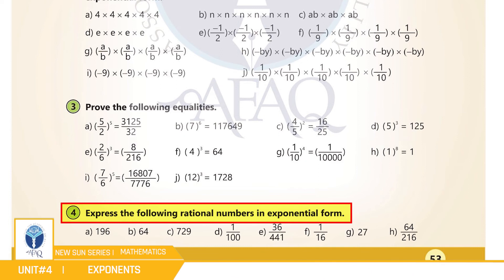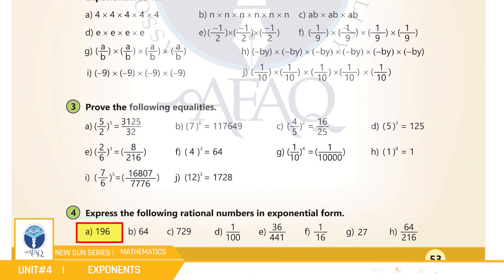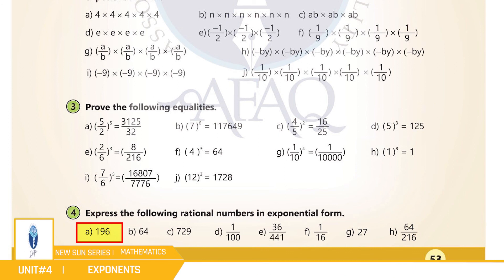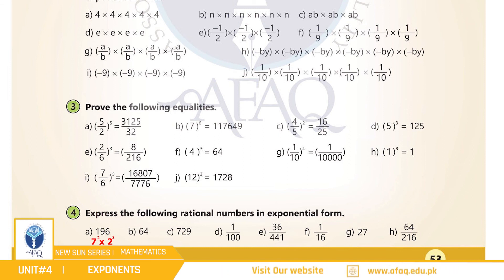Question number 4: express the following rational numbers in exponential form. (a) 196 — بچو اگر ہم 196 کو 7 پر divide کریں تو quotient آئے گا 28، اگر 28 کو 7 پر divide کریں تو quotient آئے گا 4، اور اگر 4 کو 2 پر divide کریں تو quotient آئے گا 2۔ اس طرح 196 کے factors ہوئے 7×7×2×2، اور exponential form بنا 7² × 2²۔ بچو اسی طرح سے آپ نے اگلے سوال خود حل کرنے ہیں۔